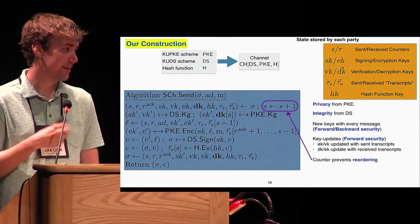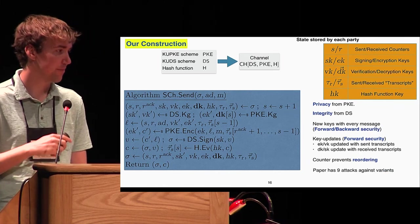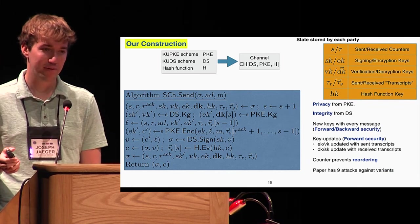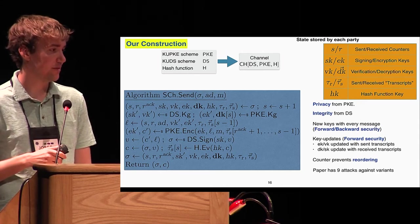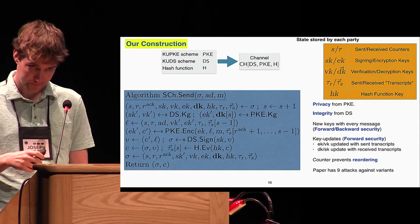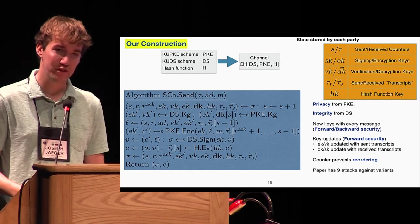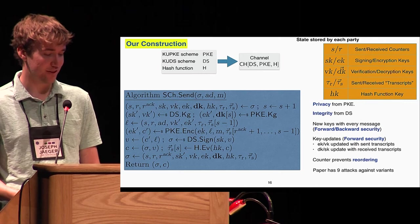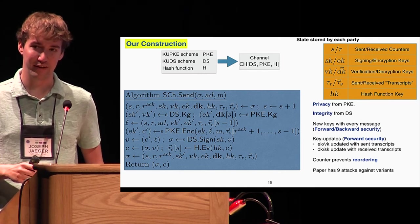Then finally, the counter just prevents simple sort of reordering attacks. In our paper, to provide some intuition for all of the fine details of how our construction worked, we provide nine different attacks against small variants of our construction which show why the security would be lost if we had done things slightly differently in a number of ways.